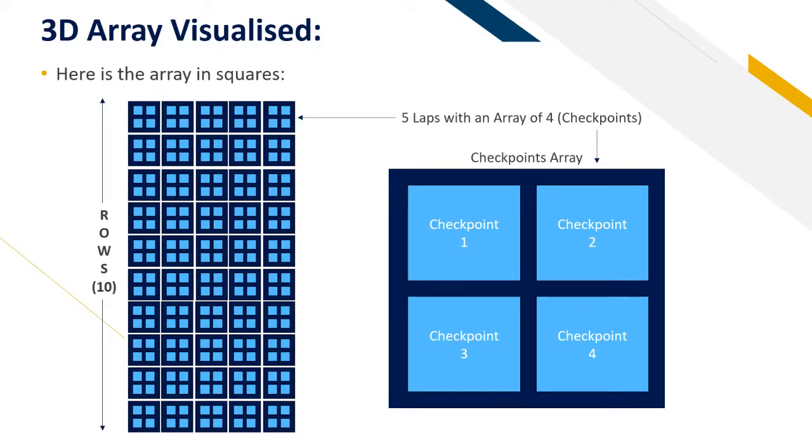Here it is visualized. We have 10 rows to represent each racer and for each row there are 5 columns. And for each of those 5 columns there is a separate array called checkpoints which holds 4 elements inside that. So for each row there are 5 arrays and each of those 5 arrays contains an array of 4.